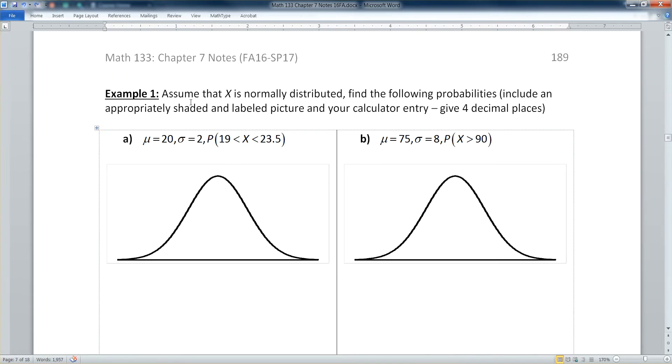Okay, so let's go down here and look at this example. We're going to assume that x is normally distributed. We're going to find the following probabilities. We're going to include an appropriately shaded and labeled picture, which means you're going to have to put your numbers down in appropriate spots. You're going to have to shade the appropriate region, and you're going to have to label everything. And you're going to give your calculator entry and then four decimal places for your result.